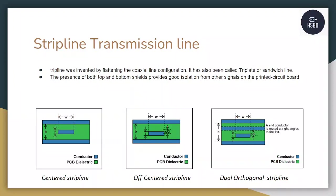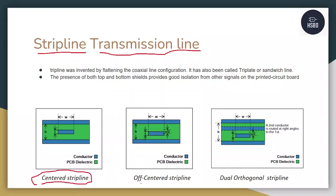Strip line transmission lines are majorly used in PCB designs. Unlike microstrip lines which are on the top and bottom layers, strip line traces are embedded inside the board stack-up — all traces inside the board except the top and bottom layers are strip lines. Strip lines are divided into three categories: centered strip line (most used), off-centered strip line, and dual orthogonal strip lines (least used).